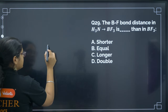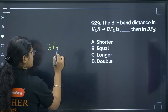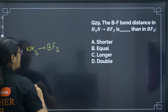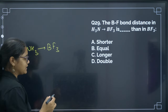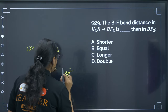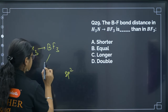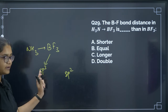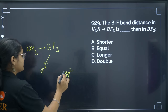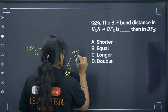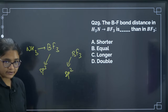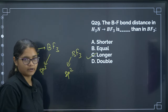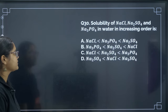Next: the B–F bond distance in BF3 and in the NH3·BF3 adduct. BF3 alone has SP2 hybridization. After forming the adduct with NH3, boron becomes SP3 hybridized. As SP3 has less S character than SP2, the bond length increases. So the B–F bond in the adduct is longer than in BF3 alone. The correct answer is option C.